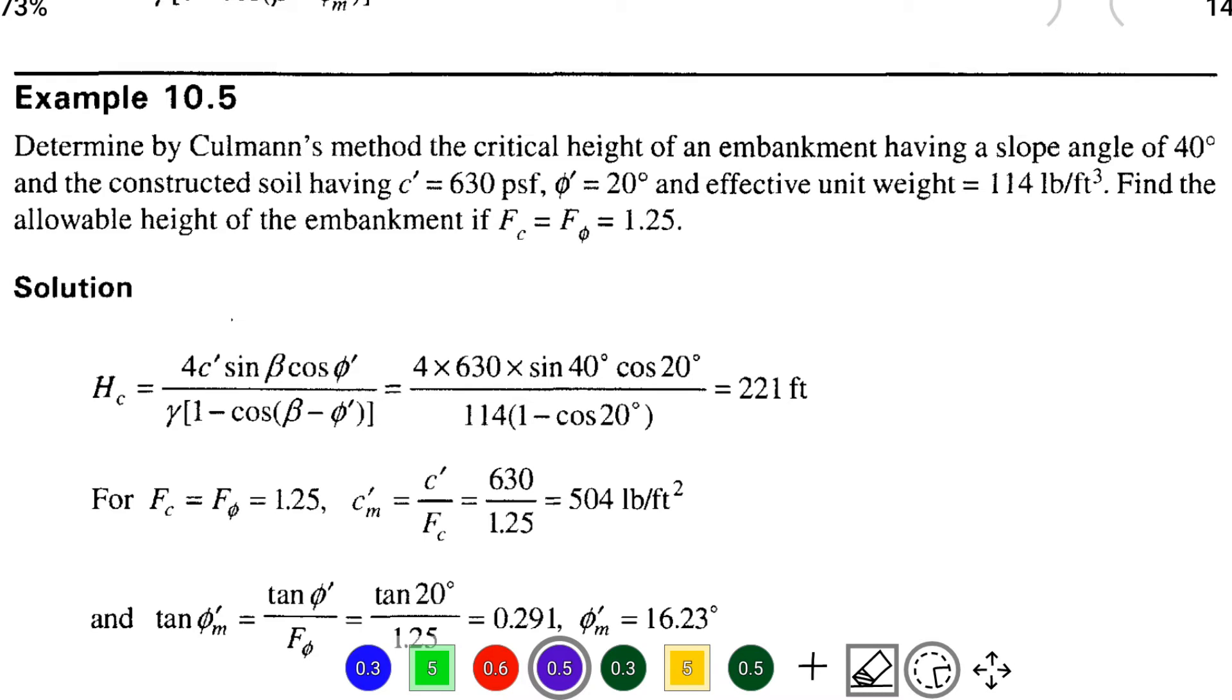Hello friends, welcome to civil engineering exam. Today we're going to see a problem related to soil mechanics in the topic of slope stability. The question is: determine by Culmann's method the critical height of an embankment having a slope angle of 40 degrees.